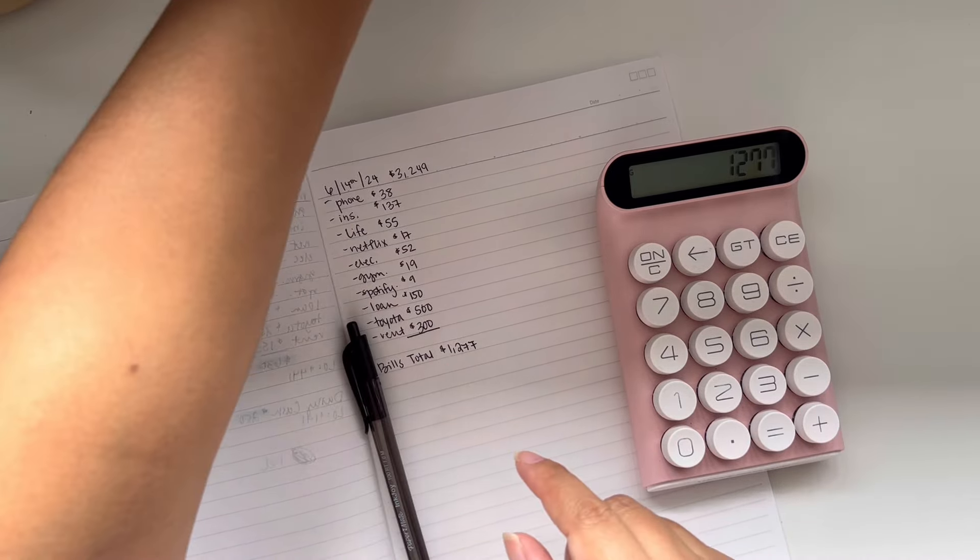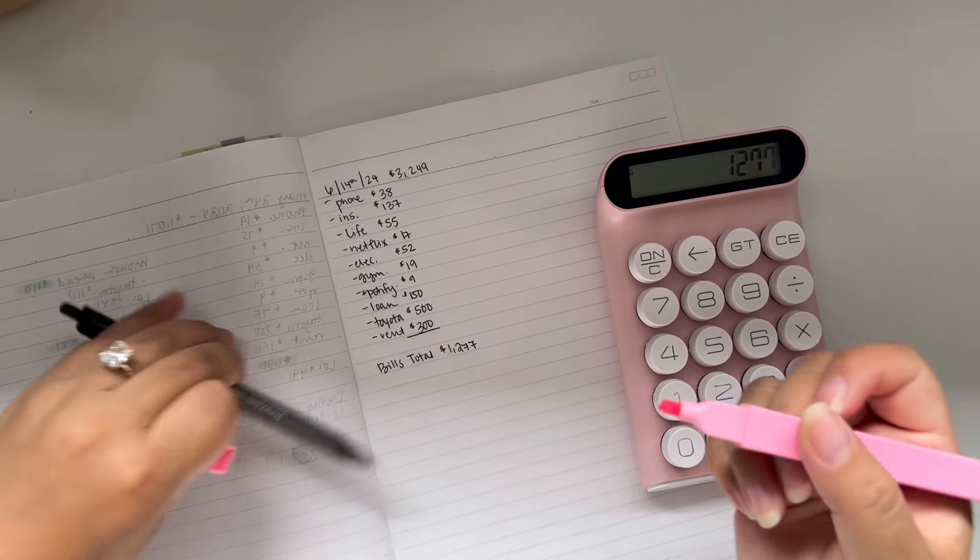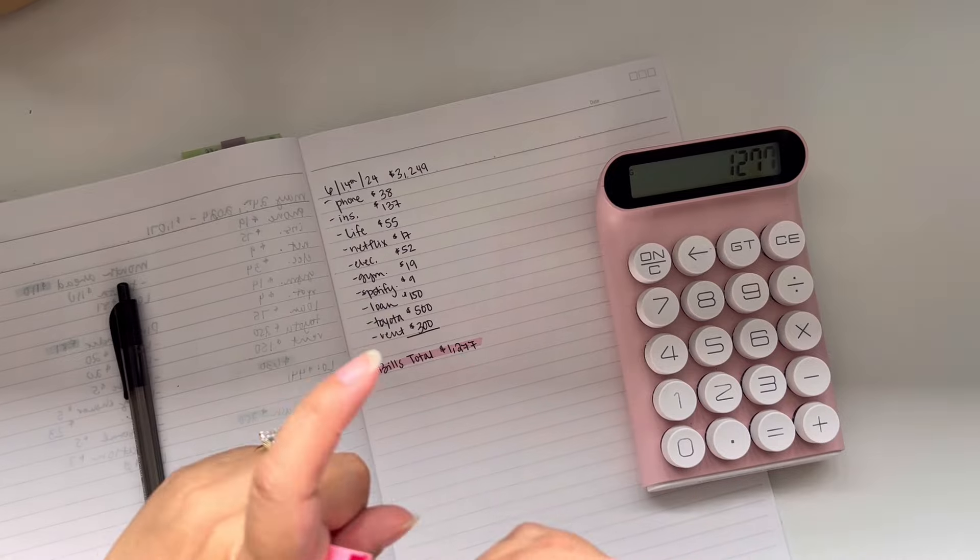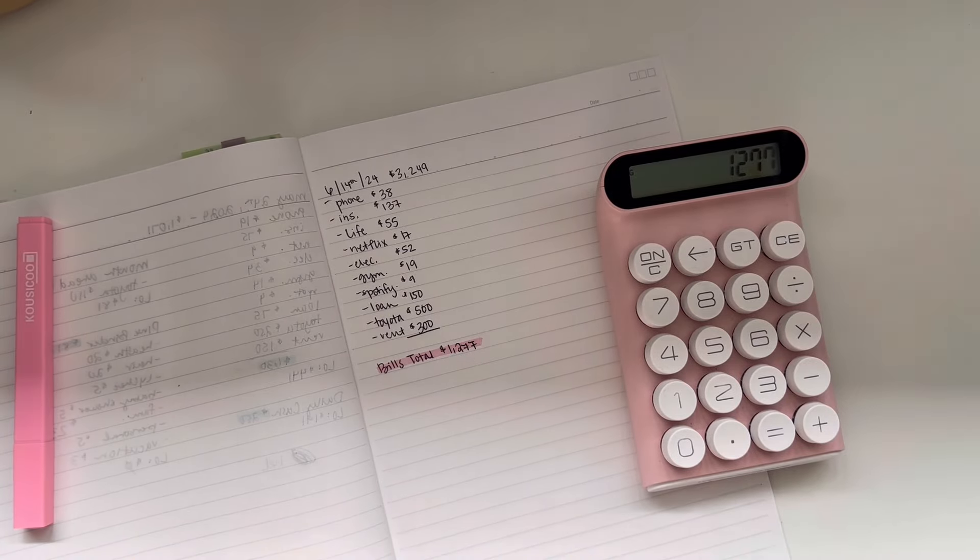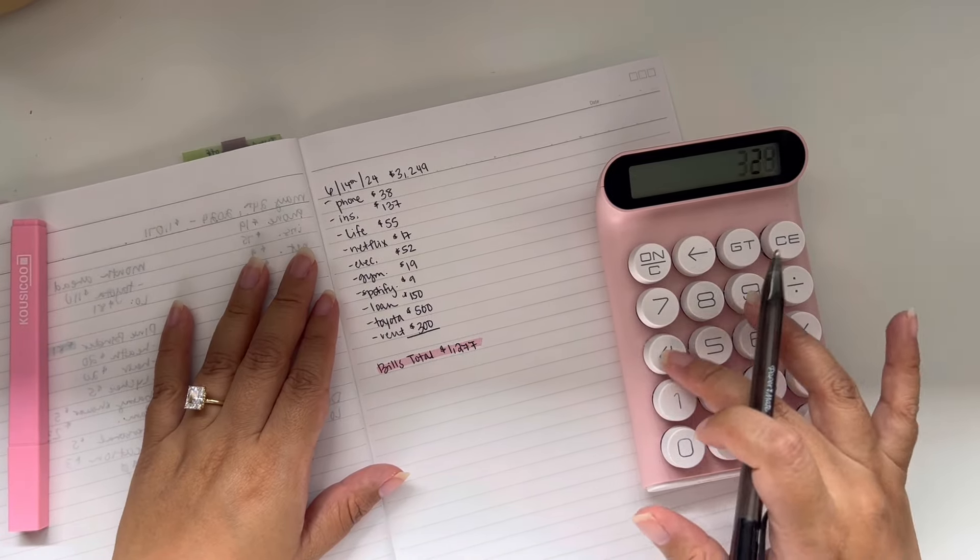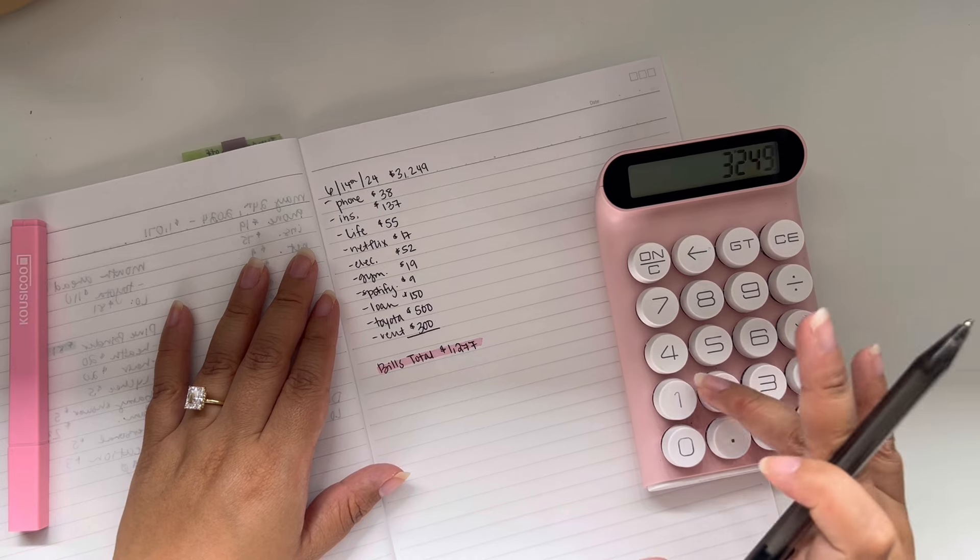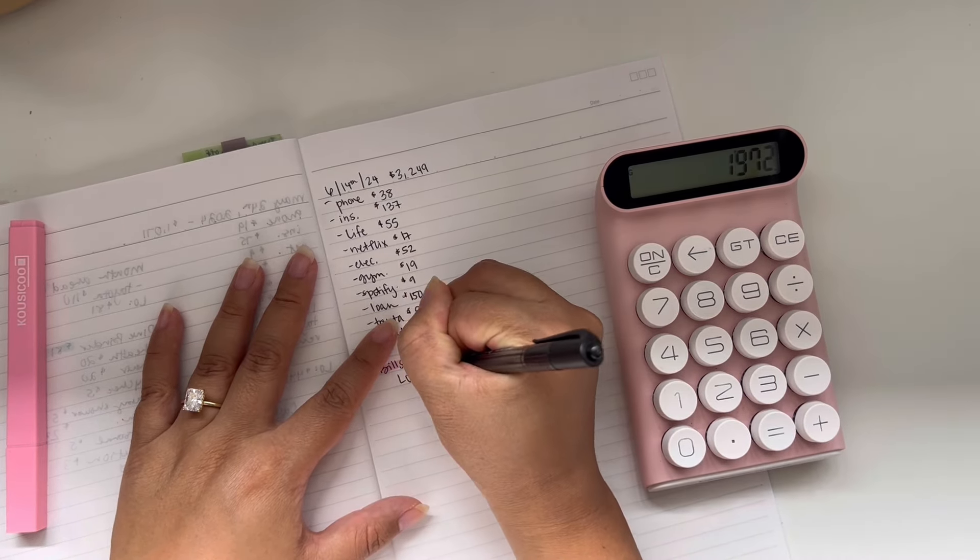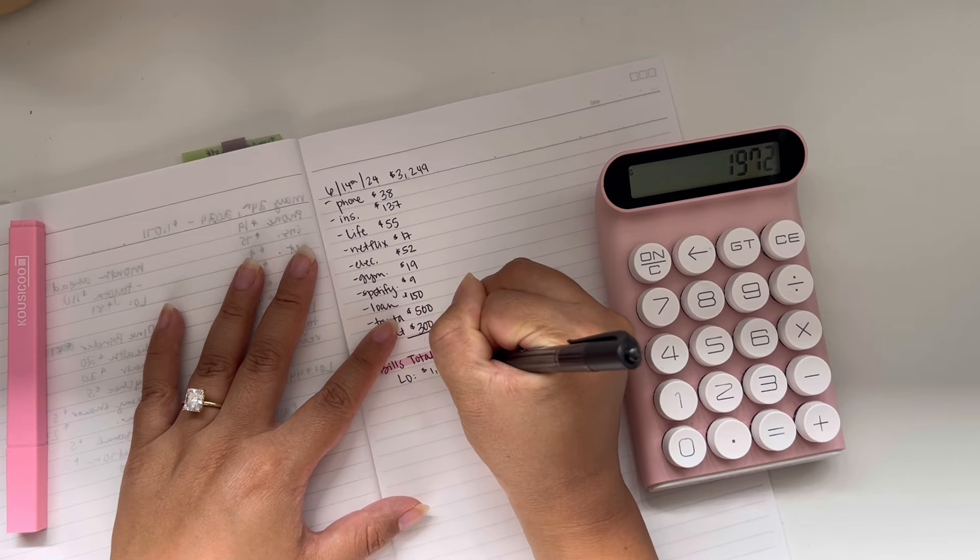So my bills total, I want to go ahead and highlight it. It makes it easier for me to know where I'm at. So bills total is $1,277. So $3,249 minus $1,277. Okay. So we have a leftover of $1,972.